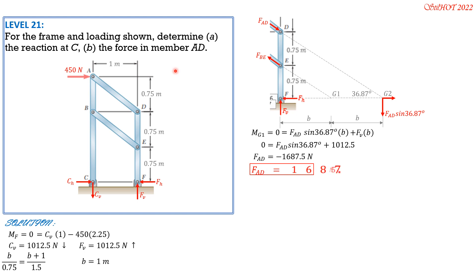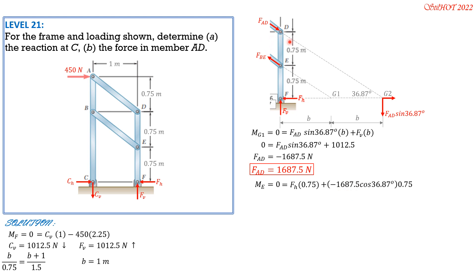Therefore, the force in member AD is 1687.5 Newtons in tension. Next we need FH. Going back to the free body diagram, we sum moments about E equal to zero, clockwise positive. This gives FH times 0.75 plus the horizontal component of FAD (which is negative 1687.5 cos 36.87°) times 0.75 equals zero. Canceling 0.75, FH is positive — so it is leftward at 1350 Newtons.